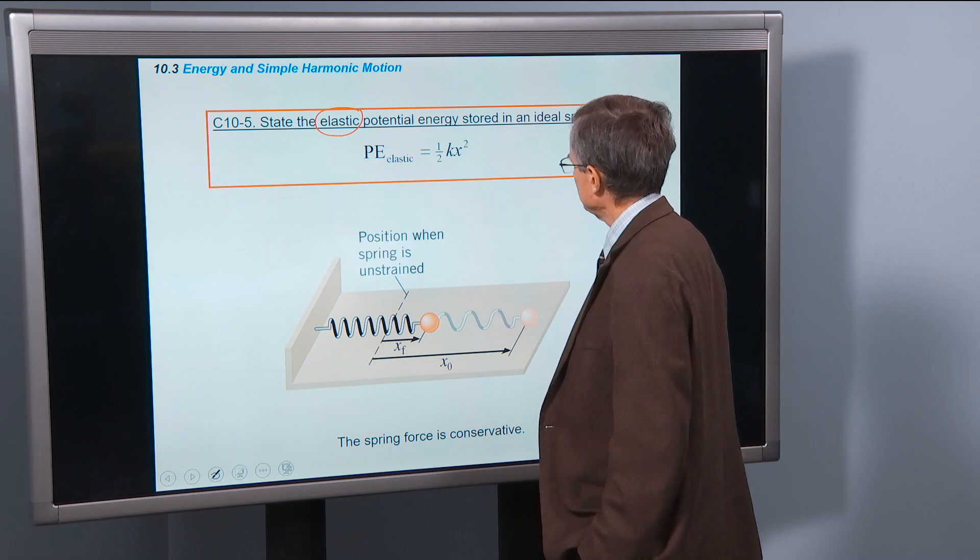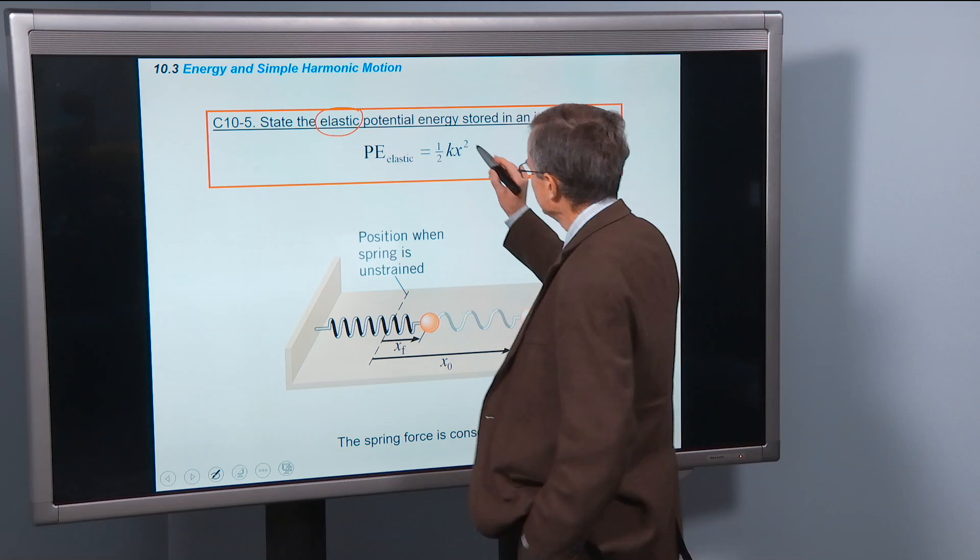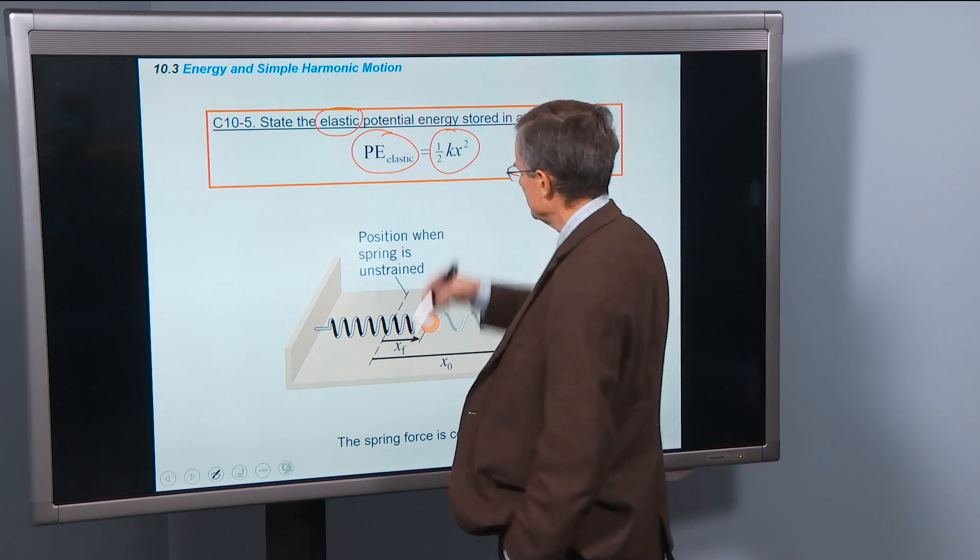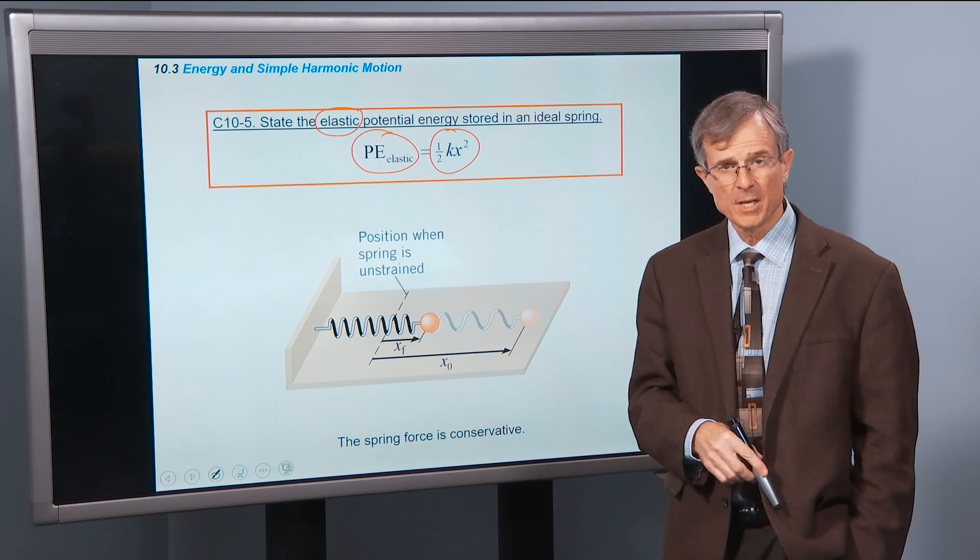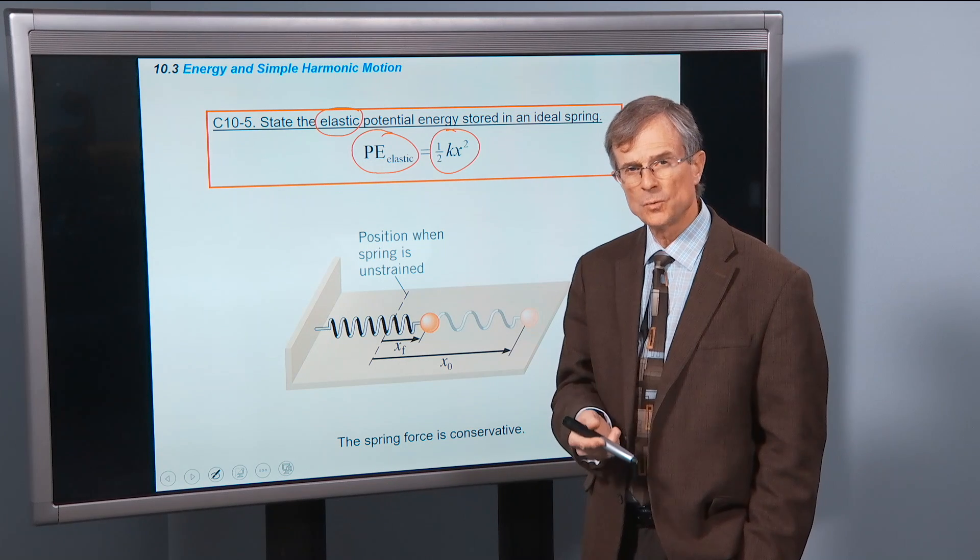So in an ideal spring, this elastic potential energy is one half times k, spring constant, times x, the displacement squared.